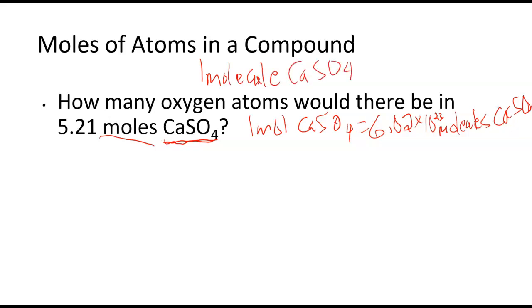we can look at the formula and figure out how many oxygen atoms are in that formula. There's one calcium, we have one sulfur, and we have four oxygens. So for every one molecule of calcium sulfate, I have four atoms of oxygen.